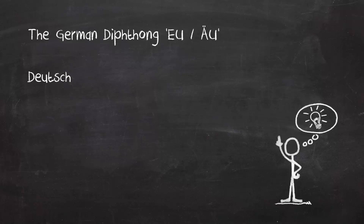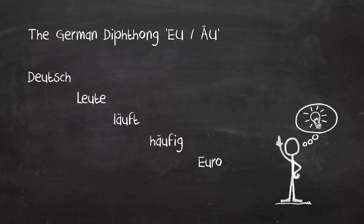Here are some words that contain this diphthong. Please feel free to repeat after me: Deutsch, Leute, Läuft, Häufig, Euro. Many learners pronounce this last word as 'EU-RO', but that's wrong. In German we pronounce the European currency as 'Euro', starting with the same OI sound.